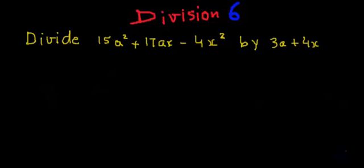Hi, in today's lesson of division in algebra we will try and do the division using the factorization method, in which we actually find the factors of both the dividend and divisor and then see if the factors can be cancelled to find the quotient.